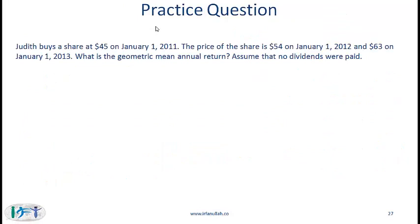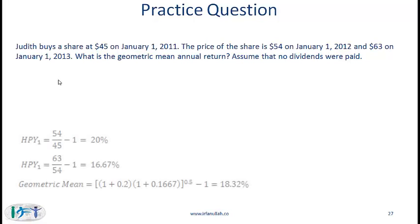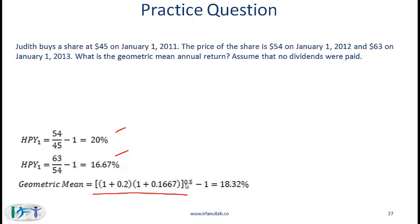To make sure you understand this concept, do the practice problem. You should calculate the return for the first year and the second year, then compute the geometric mean. The exponent 0.5 is simply 1 over 2 because we have two periods, and we subtract 1 to come up with a return. You should get 0.1832, which is 18.32%.